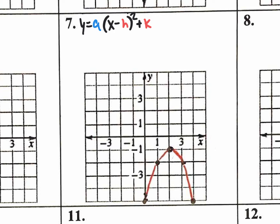Now if it were negative one, then we would have the pattern: one over, one down; back to the vertex, two over, four down. Do we have that pattern? Yes, we do. One, one, two, four — so it does have that pattern. So we know that the a value is negative one.